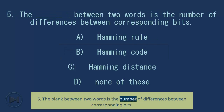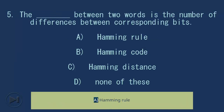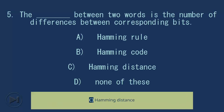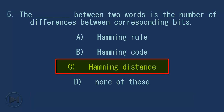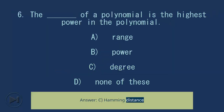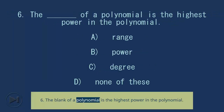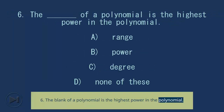Question 5: The blank between two words is the number of differences between corresponding bits. A) Hamming rule, B) Hamming code, C) Hamming distance, D) none of these. Answer: C, Hamming distance.